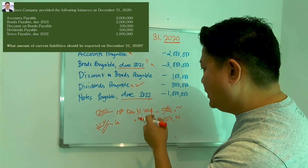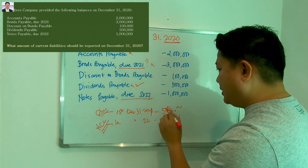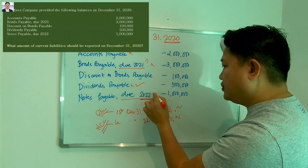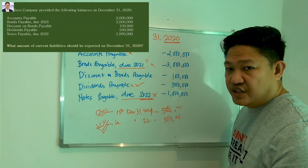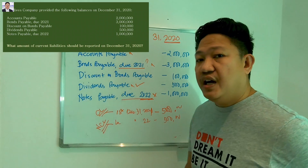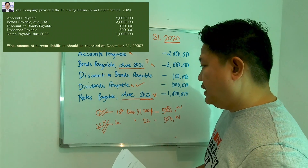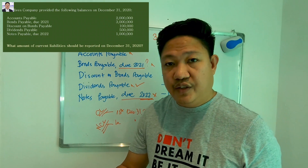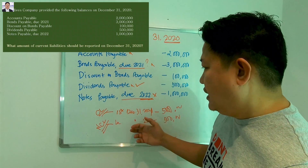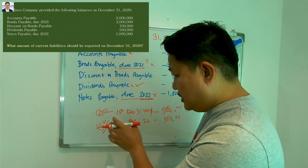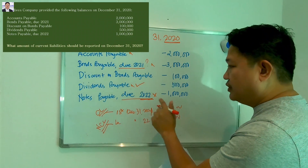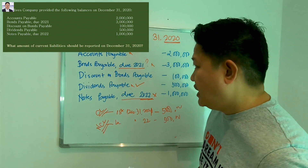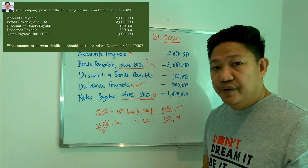In this case, the notes payable matures in one lump sum on December 31, 2022 only, so we should not consider it as current liability — rather, we record it as non-current liability. Of course, any accrued interest on the notes payable and bonds payable would be a separate matter.